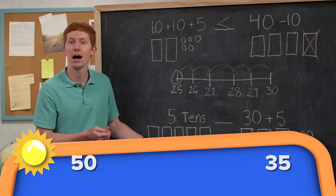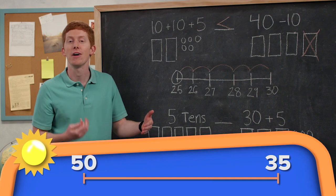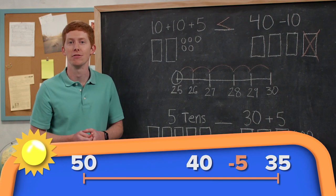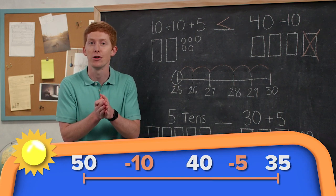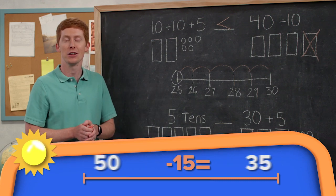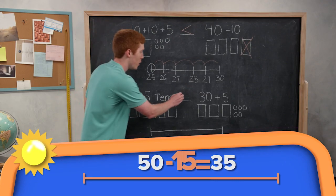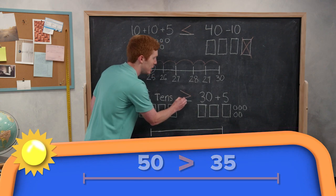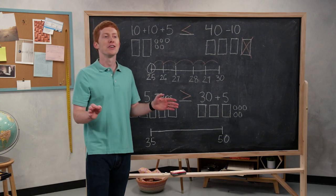Okay. We got to go a little bit more to 35, 40, and then take five away. And I'm at 35. So 10 and five together made 15. It's 15 greater than 35. So we know that five tens is greater than 30 plus five.